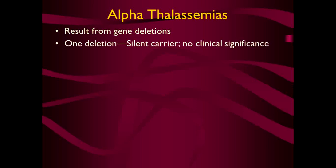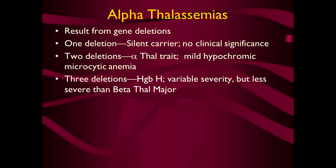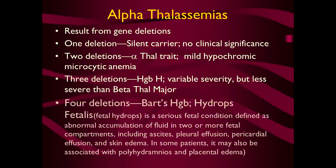Alpha-thalassemias result from gene deletions. One deletion: the patient is a silent carrier with no clinical significance. Two deletions: alpha-thalassemia trait with mild hypochromic microcytic anemia. Three deletions: HbH disease, of variable severity but less severe than beta-thalassemia major. Four deletions: the condition is hydrops fetalis — a serious fetal condition with abnormal accumulation of fluid in all fetal compartments including ascites, pleural effusion, pericardial effusion, and skin edema, and possibly polyhydramnios and placental edema.